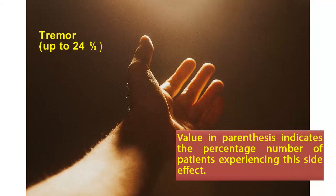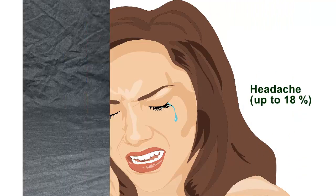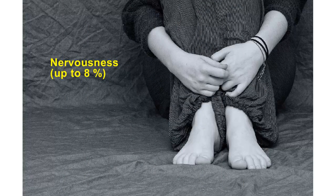Tremor: up to 24%. The value in parenthesis indicates the percentage of patients experiencing this side effect. Headache: up to 18%. Nervousness: up to 8%.